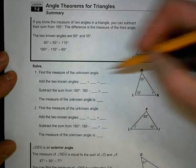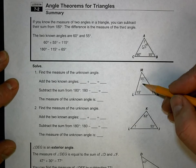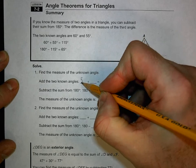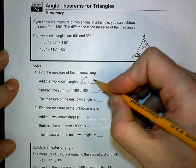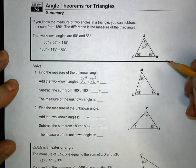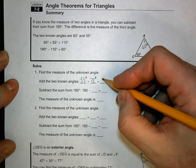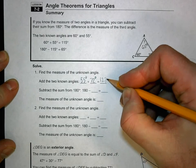So it says find the measure of the unknown angle. Well, we've got two angles that we know. One is 55 degrees. One is 72 degrees. When we add 55 and 72, we get 127 degrees.